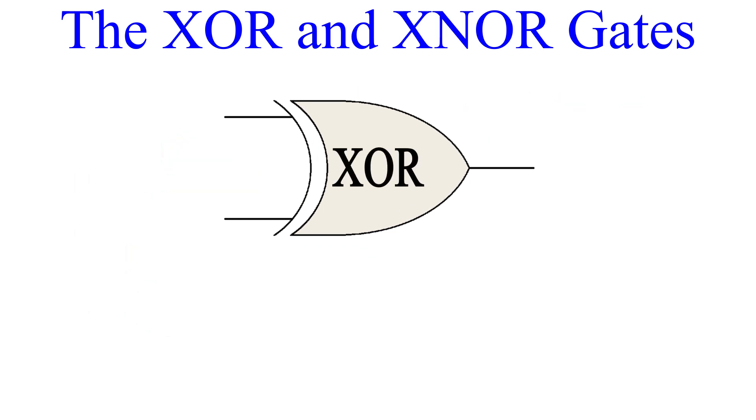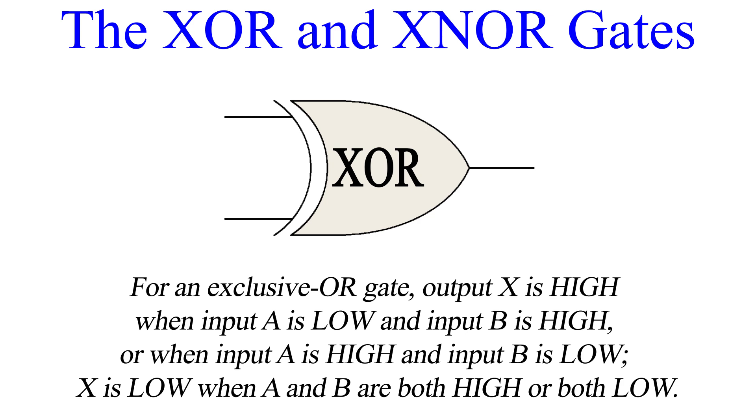Now, the logic works like this. For an exclusive OR gate, output X is high when input A is low and input B is high, or when input A is high and input B is low. X is low when A and B are both high or both low.